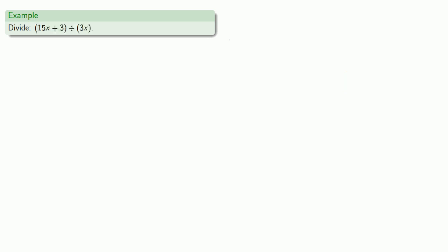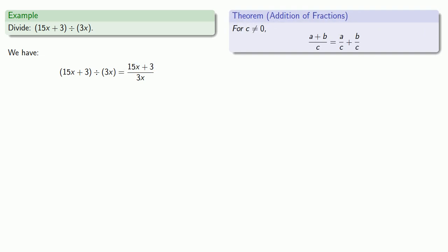Parentheses make a big difference. Here I'm taking 15x + 3, and all of that is being divided by 3x, so I can rewrite this as a fraction. Since my numerator is a sum, I can split this into two fractions: 15x over 3x plus 3 over 3x.